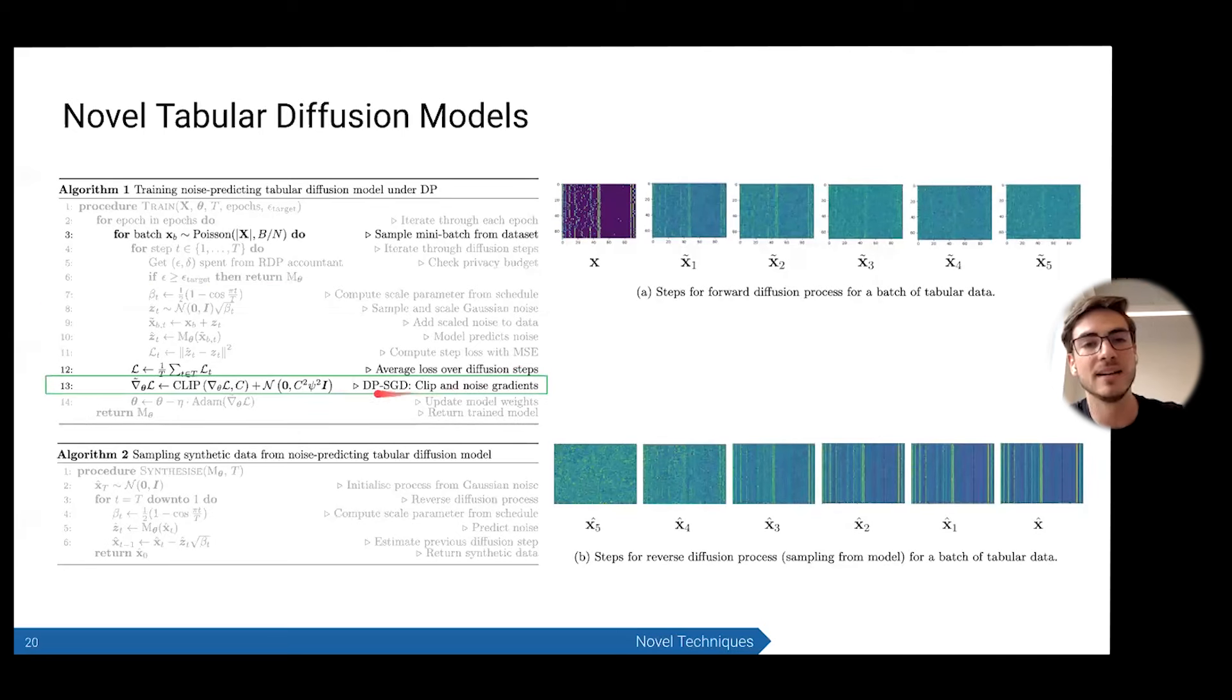The next thing to note is that our actual gradient clipping and noising that we do for differential privacy happens outside of this inner diffusion model loop. This is really powerful because it means that our models are able to learn from the same data multiple times, augmented each time by adding in this noise through the diffusion process, before we have to take any gradient cost, and that therefore means a privacy cost. So you're getting way more data leverage here. Similar to how in computer vision you might add orientations to your data.